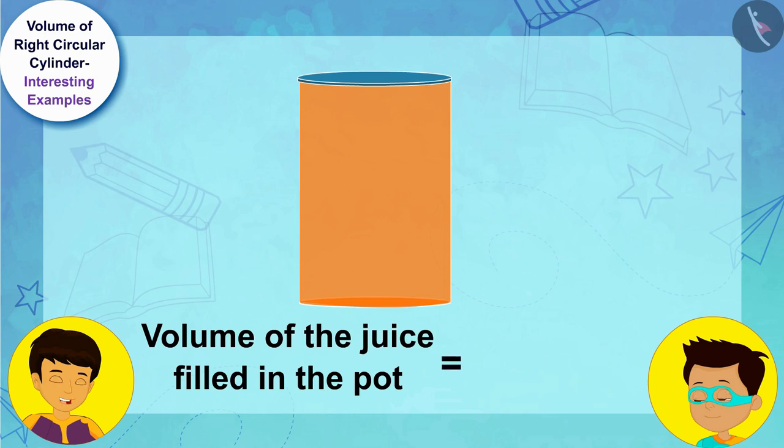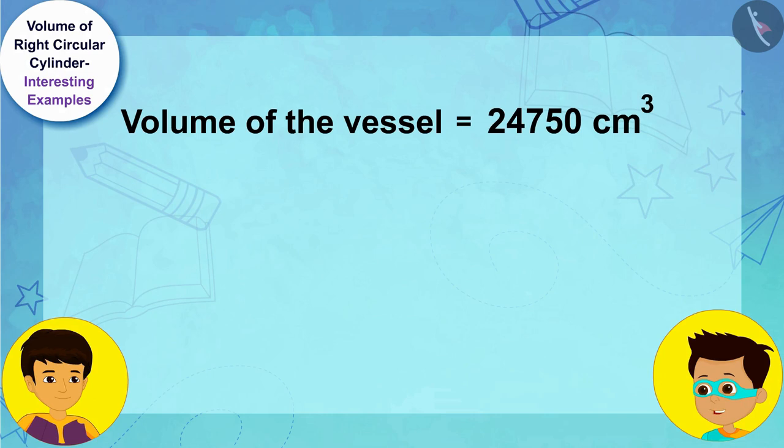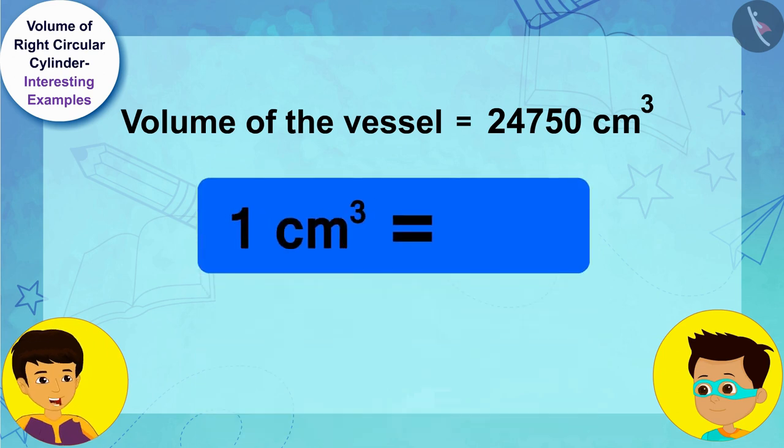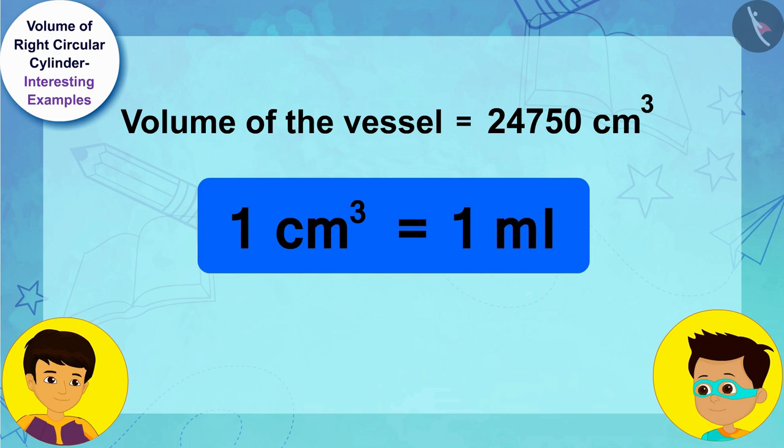But Manas, this is in cubic centimeter and we measure juice in liters, don't we? Yes Thomas. See, one cubic centimeter is equal to one milliliter. Therefore we can say that the volume of juice is 24,750 milliliters.